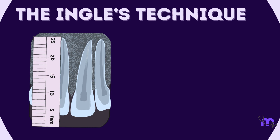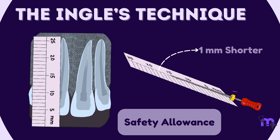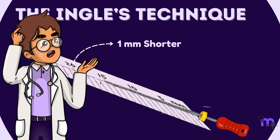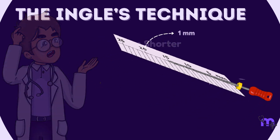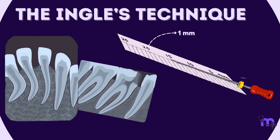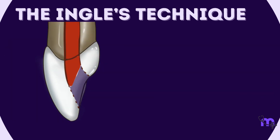After this, refer to the original radiograph to measure and estimate the working length of the tooth from the occlusal surface to the tooth apex. Keep the estimated working length one millimeter short of the length of the tooth as measured on the radiograph. This is done to compensate for any distortion that may have occurred while taking the radiograph.